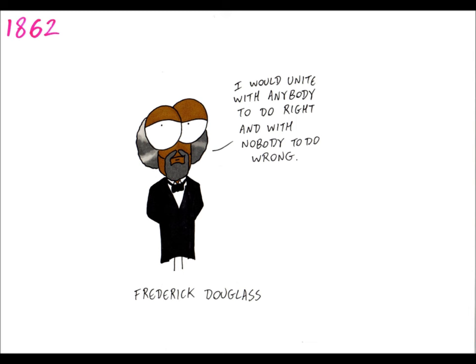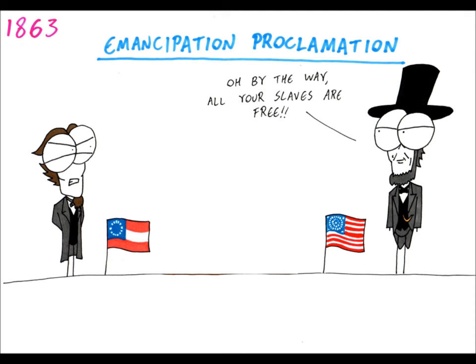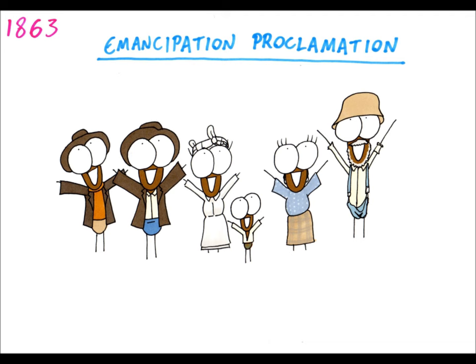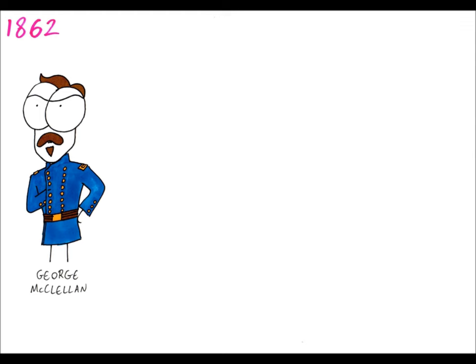Frederick Douglass, a former slave and well-travelled social reformer, had been campaigning for the abolition of slavery — that that's what this war was truly about. In January 1863, Lincoln brought about the Emancipation Proclamation, an executive order that led to the freeing of three million slaves in the Confederate States. Many African Americans joined the Union Army to fight against slavery.